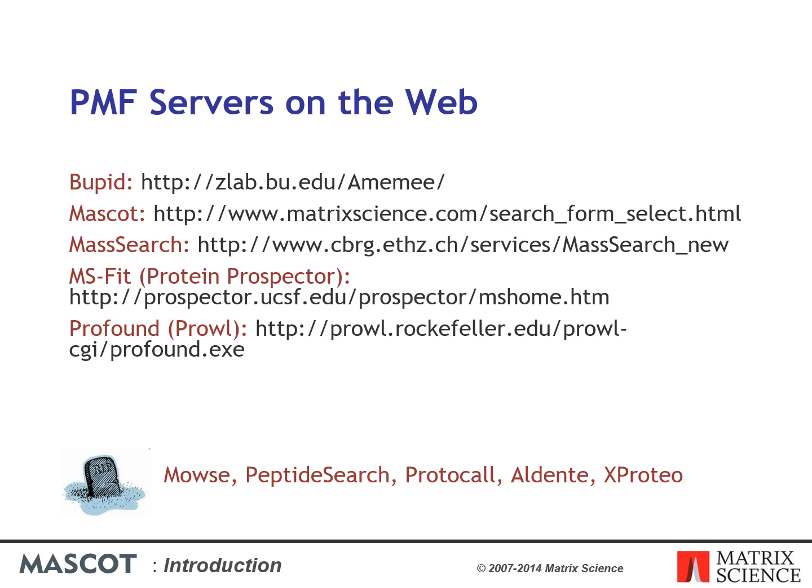These presentations will focus on Mascot, but you should be aware that there are several other peptide mass fingerprint search engines on the web. There are also software packages available for download that run locally or are sold as commercial products. Some of the early search engines, such as Mowse and PeptideSearch, are no longer available.